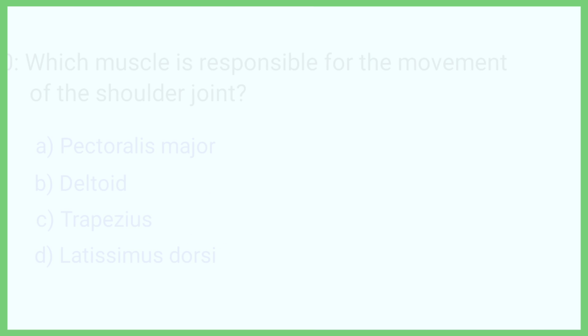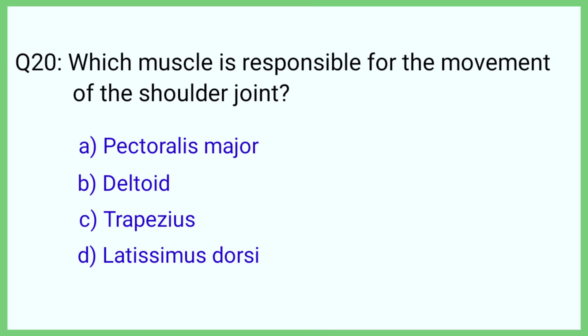Question number 20. Which muscle is responsible for the movement of the shoulder joint? The correct answer is option B: Deltoid.